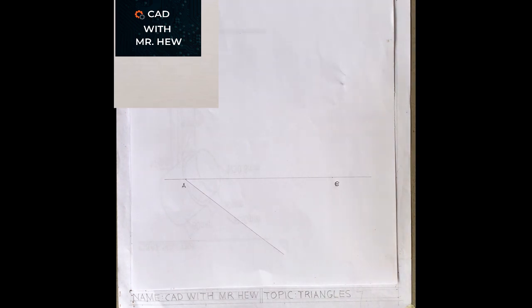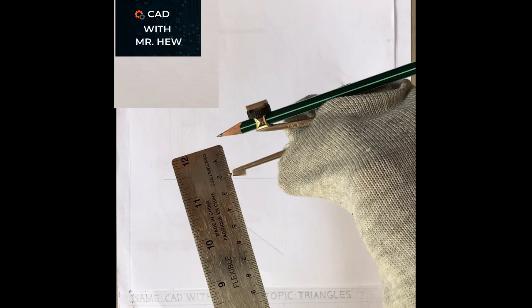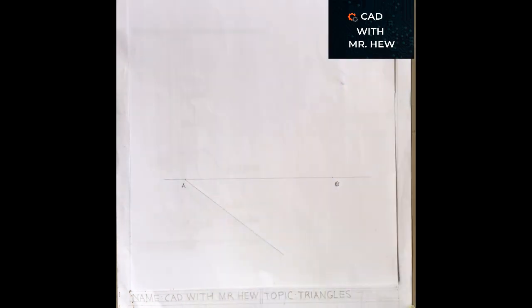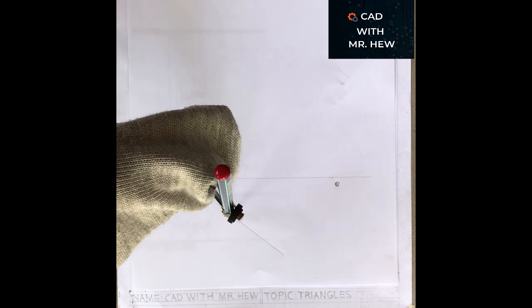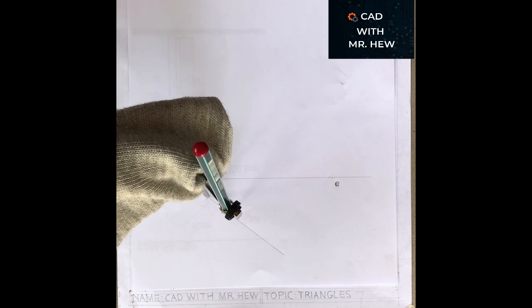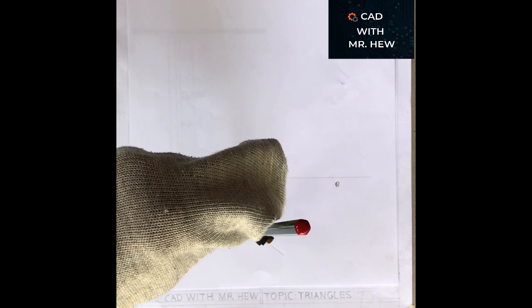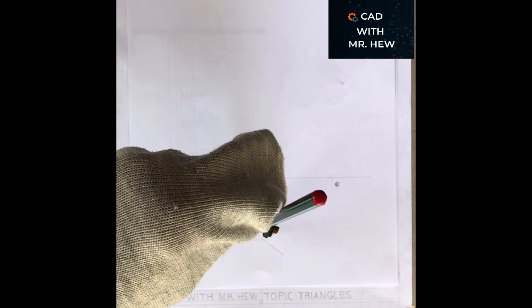We're going to draw a line at any angle, any length, from A going down at an angle. Then we're going to get our compass, pencil, and ruler and measure two centimeters — it doesn't have to be two centimeters, it's any convenient radius. From A, we're going to mark three arcs using the same radius of two centimeters: one, two, three. So we have three arcs drawn along the angled line.